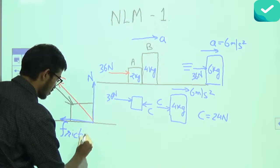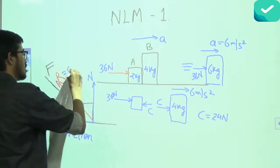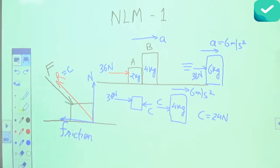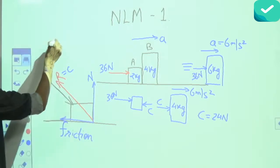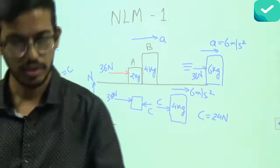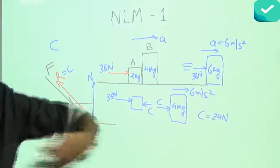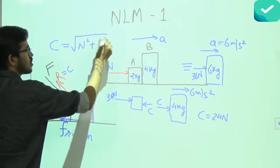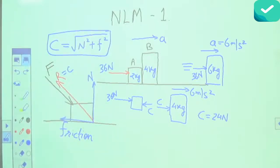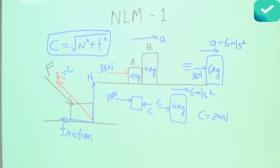So in reality, contact force — the reaction force, the ground's contact force — has two components. This is an important point that people usually don't remember: friction and normal's resultant is the contact force. Contact force is actually the resultant of normal reaction and frictional force.